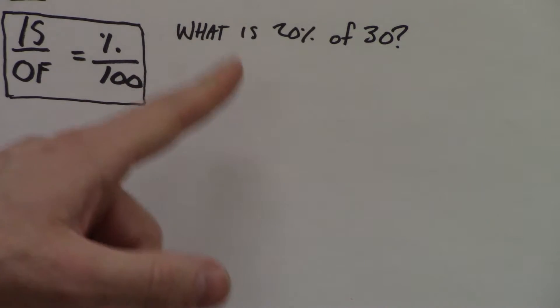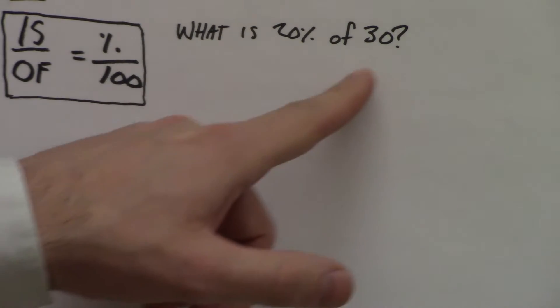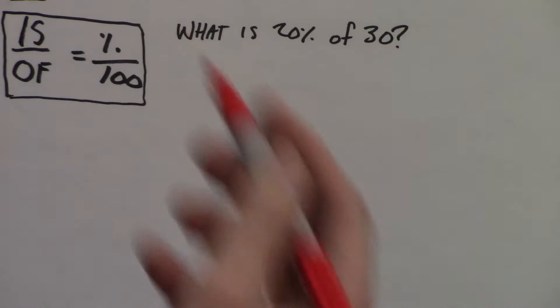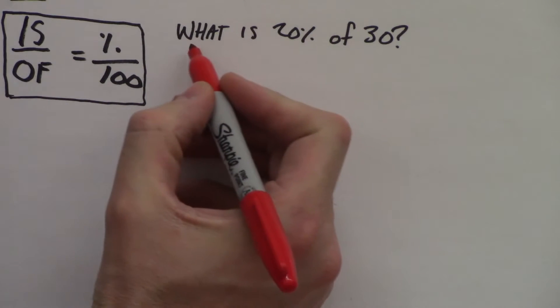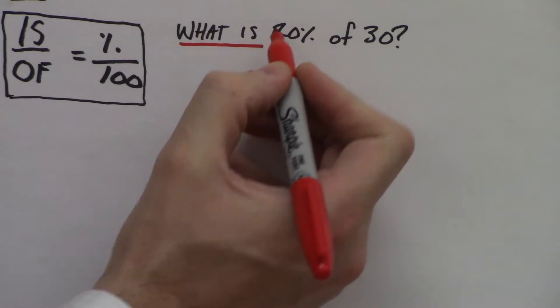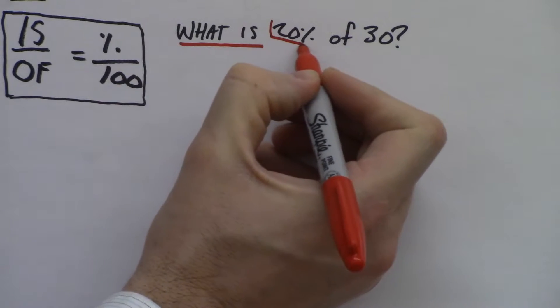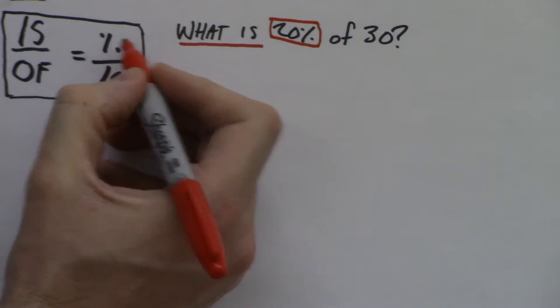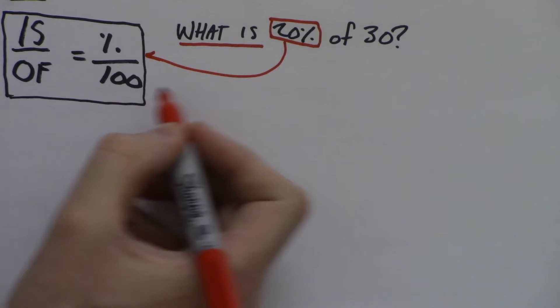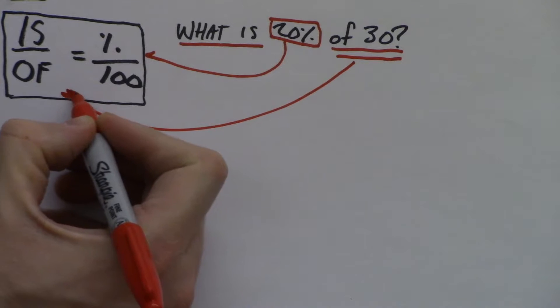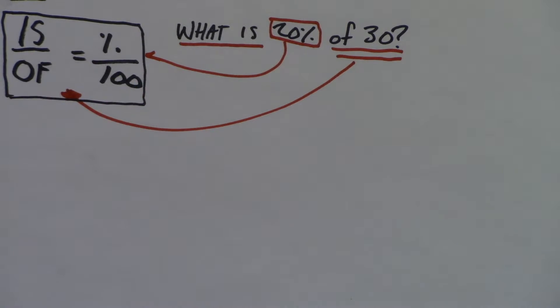So what is 20% of 30? What we need to do, like any other formula, is figure out what information we have. I can see that 'what is' is blank. That's what we're looking for. We have this 20% right here, which means we're going to stick this 20% in the percent section. And of 30? Well that is going to go over here in the of section.